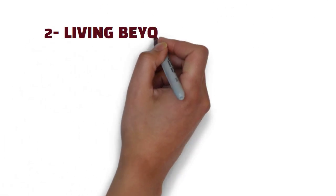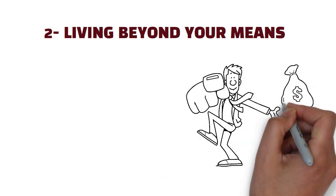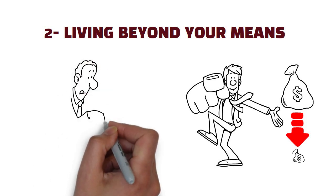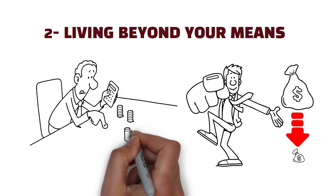2. Living beyond your means. Overspending can lead to a never-ending cycle of debt and financial stress. It's crucial to differentiate between wants and needs, and prioritize saving over unnecessary expenses.